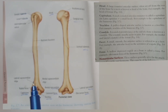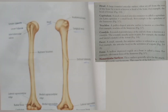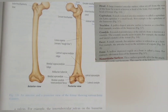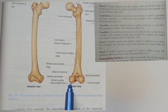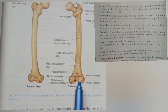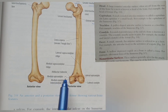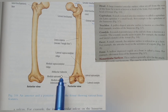Next, we have a condyle. A condyle is a rounded protuberance present in pairs. For example, this is a medial condyle and this is a lateral condyle. The condyle is present with the epicondyle. The condyle is involved in articulation, while the epicondyle has muscles attached with the connective tissue.